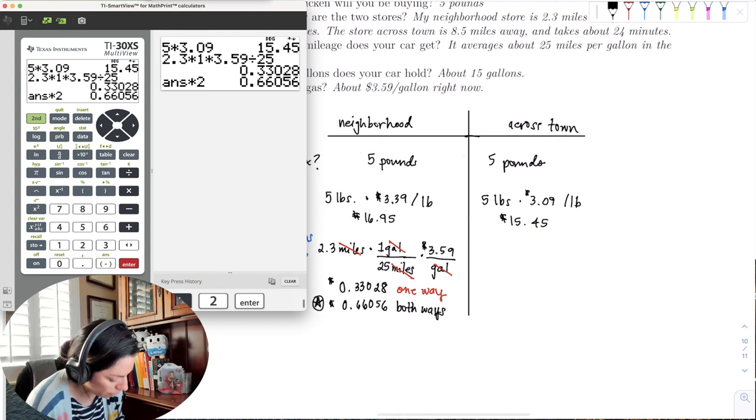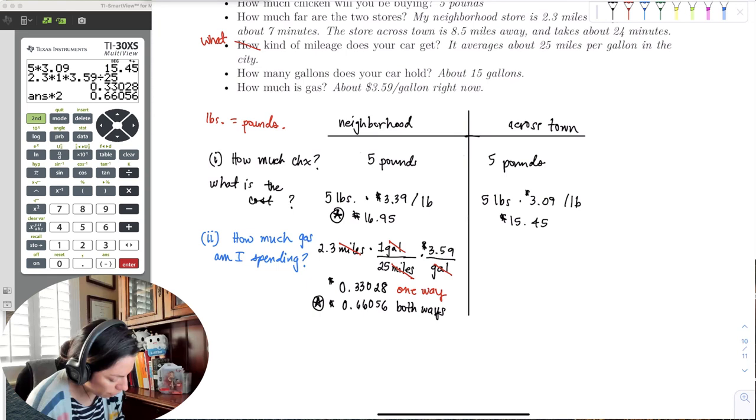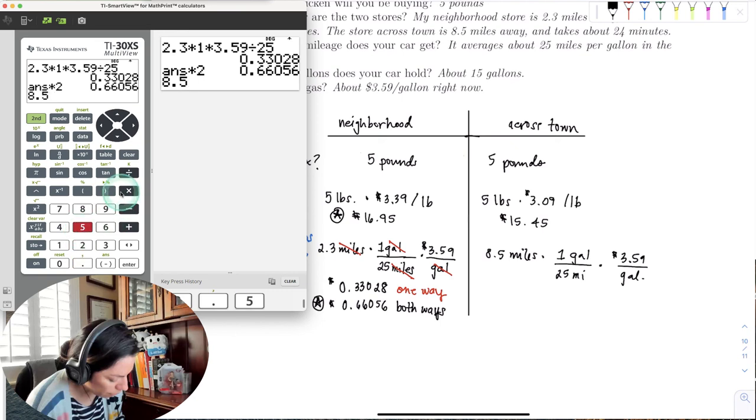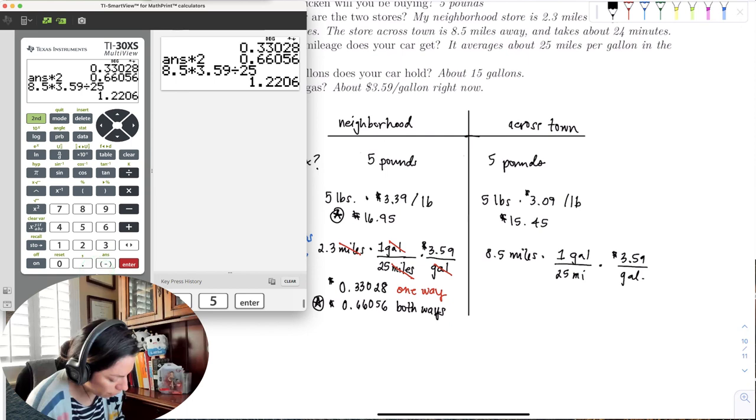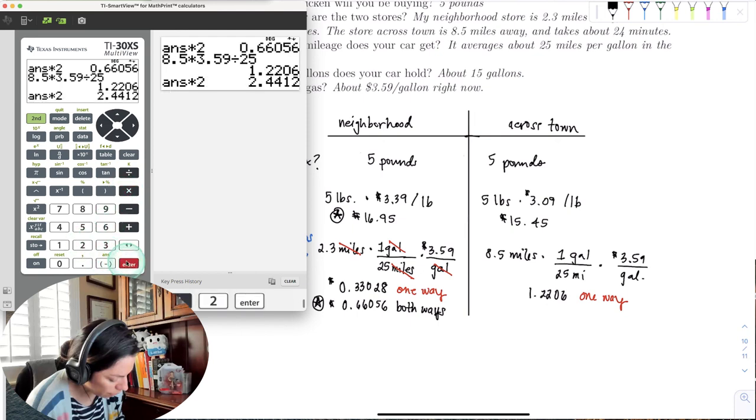For across town, it'll be the same exact thing except now we know that it's 8.5 miles away. So 8.5 miles times the same thing about the car. So 1 gallon per 25 miles times $3.59 per gallon. If I do that in the calculator, it's essentially the same exact expression except that it's 8.5 miles. So 8.5 times 3.59 and then divide by 25. So we get 1.2206, but this is, again, only one way. So for both ways, it would be times 2. So $2.4412 for both ways, to and from the store.